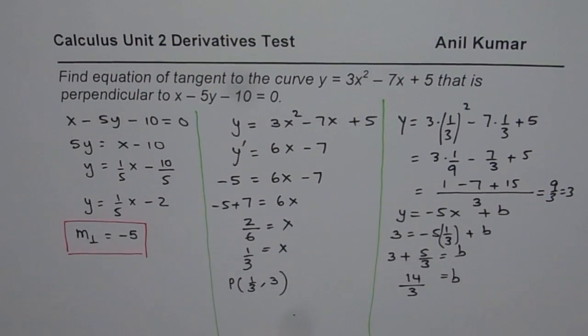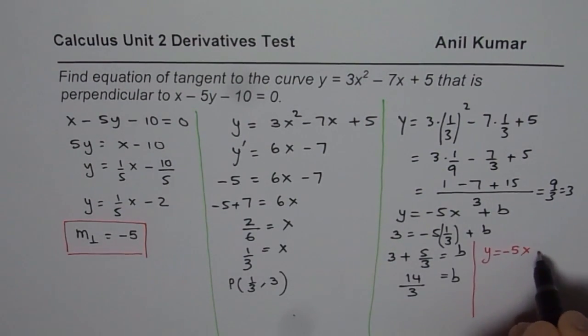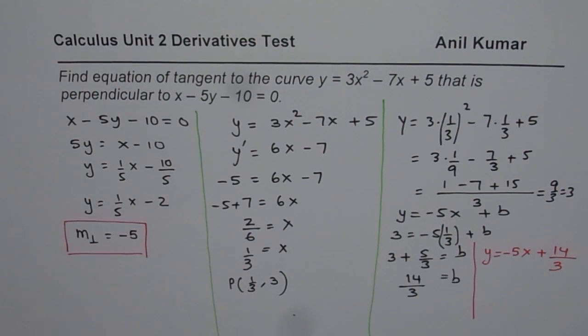That is b. So that is the value of b. And therefore, we have the equation as y equals minus 5x plus 14 over 3. So that becomes the equation of tangent line.